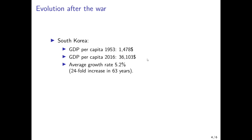Here we have statistics for South Korea. Its GDP per capita in 1953 was about $1,470 international dollars, and this increased immensely to $36,100 international dollars in 2016. This is equivalent to an annual growth rate of 5.2%, or a 24-fold increase within 63 years. Basically, within two generations, incomes increased by a factor of 24 — people would have a higher income than their grandparents by a factor of 24 within this time period.